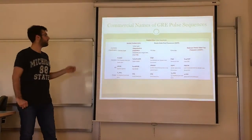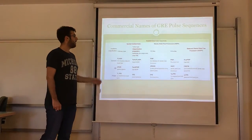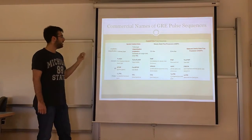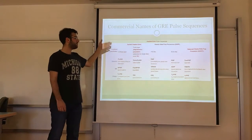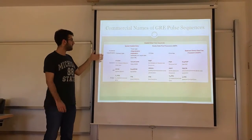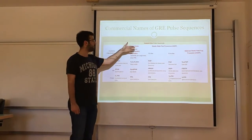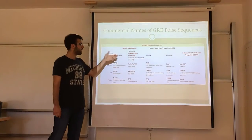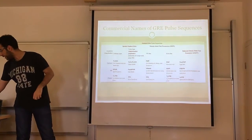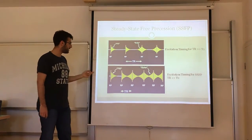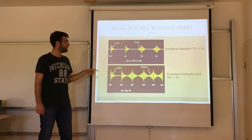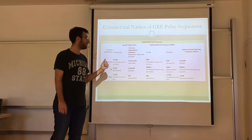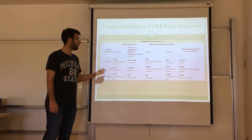I want to go through the commercial names for gradient echo pulse sequences. There are two main categories: spoiled gradient echo and steady-state free precession. Spoiled gradient echoes use a similar technique to SSFP but with a spoiler gradient. In SSFP we have two subcategories: FID-like and echo-like. In FID-like techniques we record only the FID signal; in echo-like techniques we record only the echo signal; and in balanced SSFP we record both FID-like and echo-like signals.